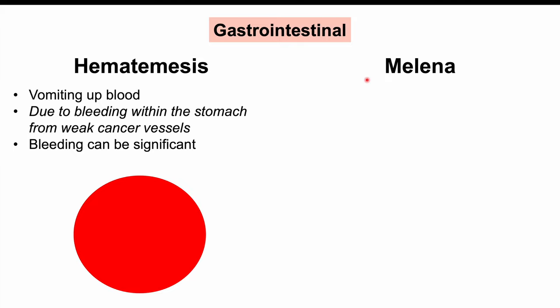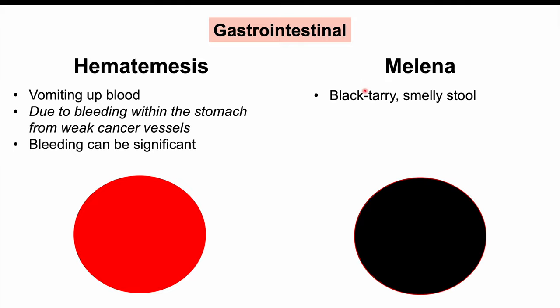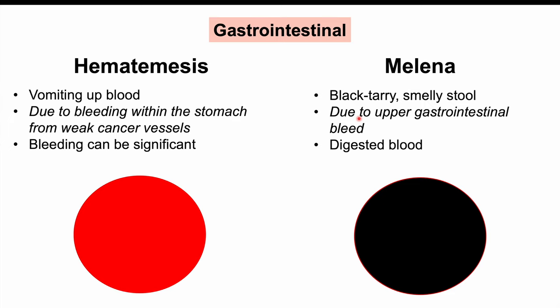We can also see melena — black, tarry, smelly stool. Melena is traditionally due to an upper gastrointestinal bleed, and the stomach is in the upper GI tract. If the patient doesn't vomit up the blood, they may still have stomach bleeding but end up digesting the blood instead. The digested hemoglobin turns black, making the stool black, tarry, and especially smelly. Those are the main gastrointestinal symptoms of gastric cancer.